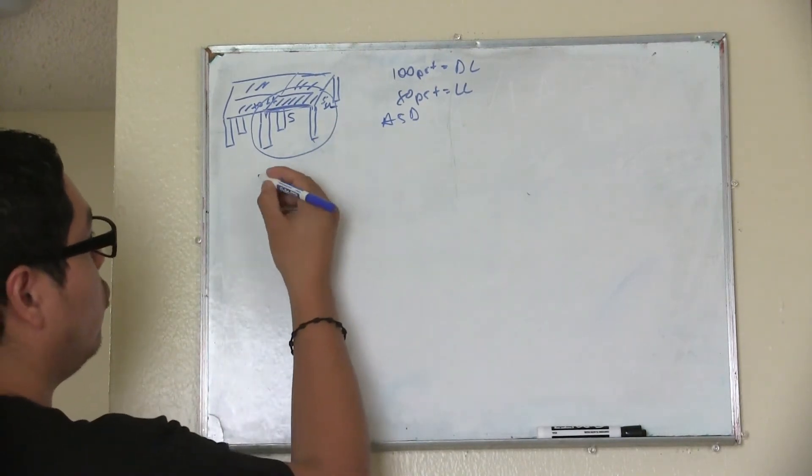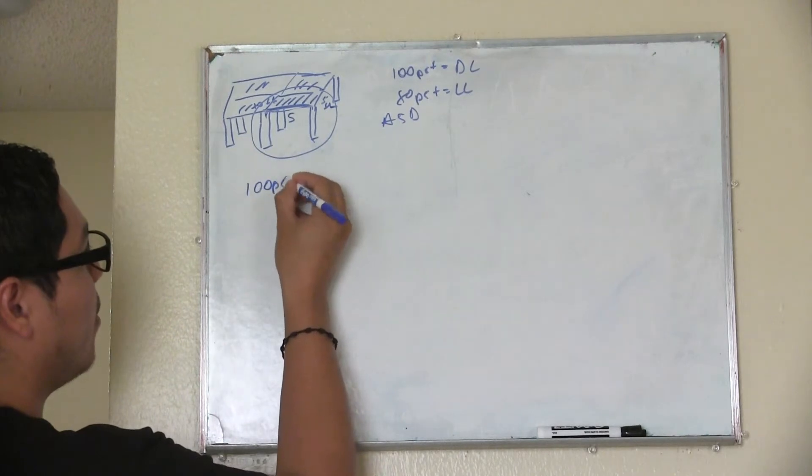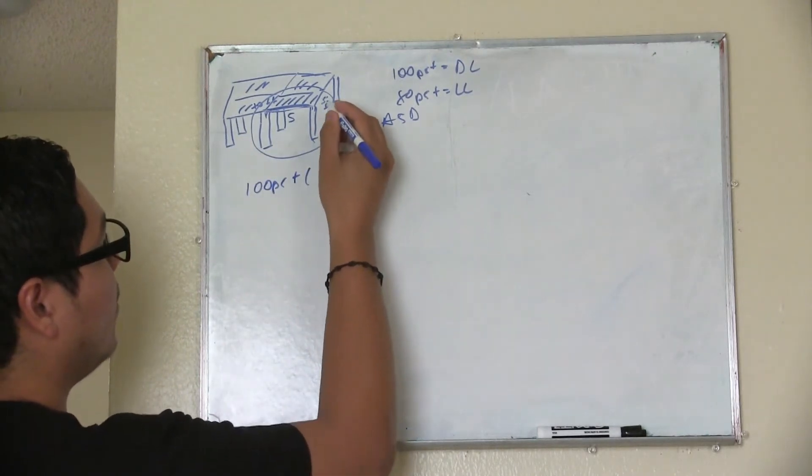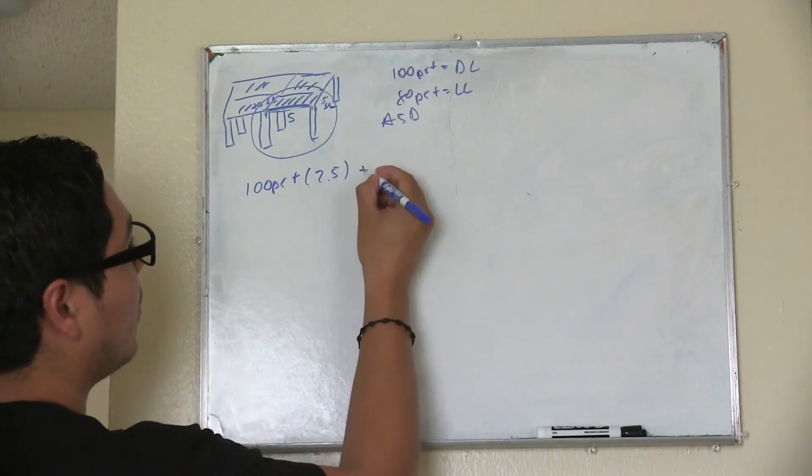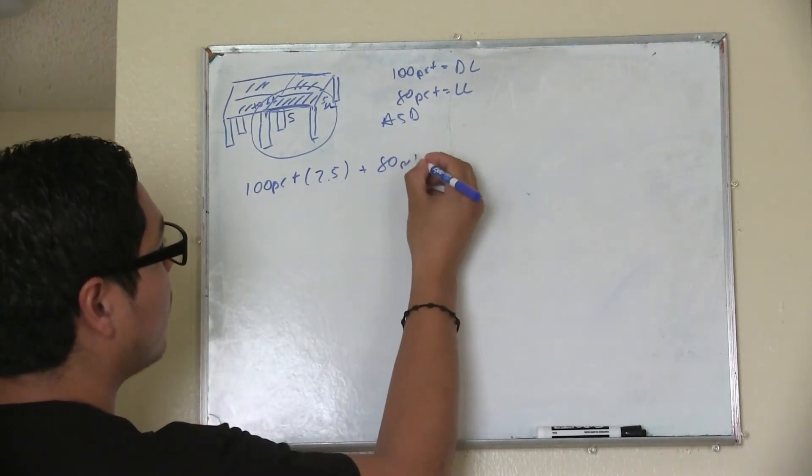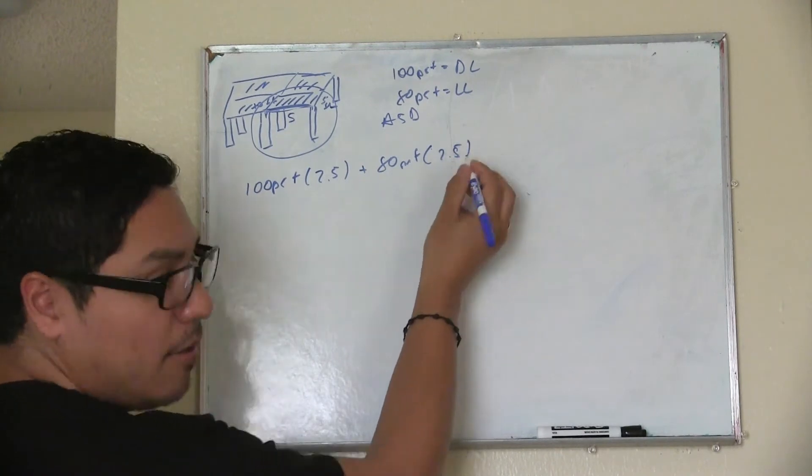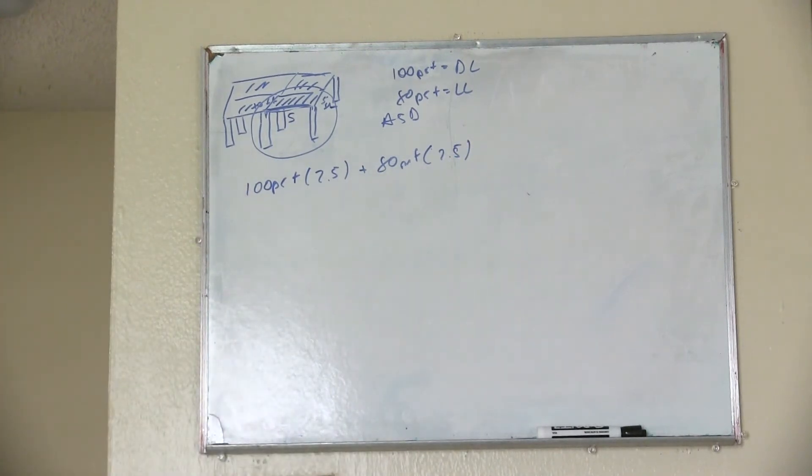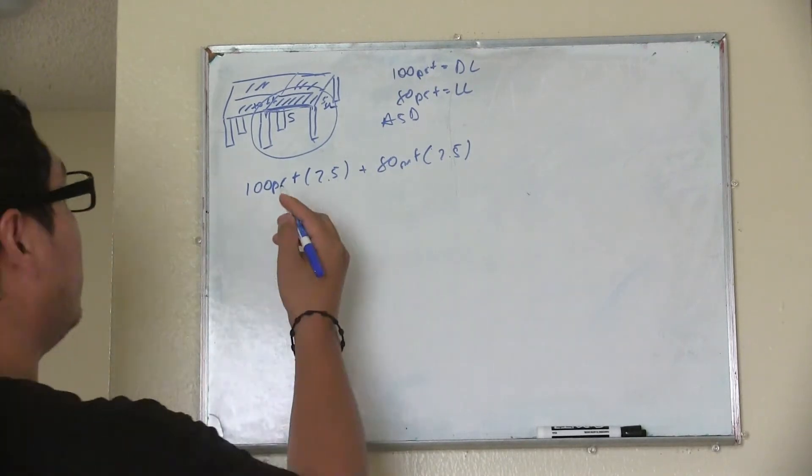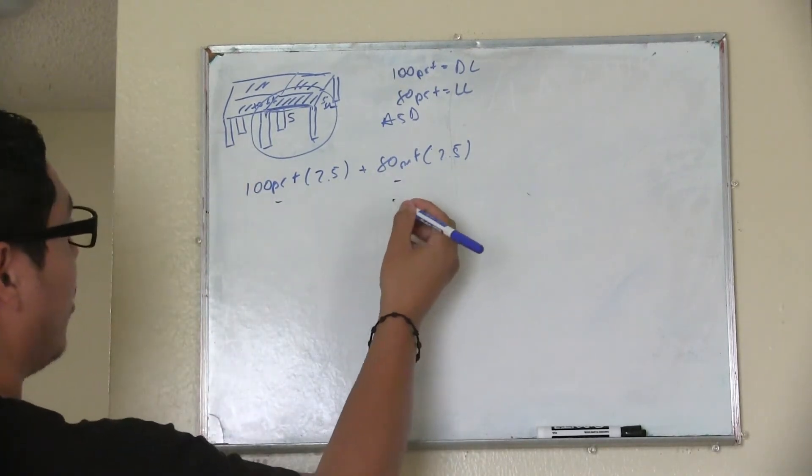So what you do is you multiply the 10 PSF times half the distance of here, so it's 2.5 feet, plus the live load that is going to be 80 PSF times 2.5. And let me grab my calculator real quick. And this is what it's going to do, it's going to convert this load into a linear load.